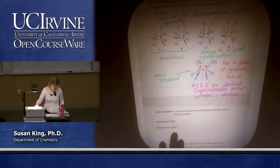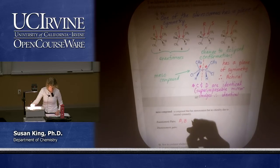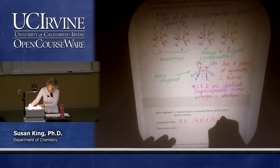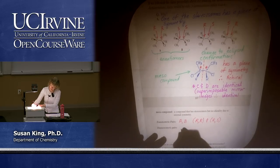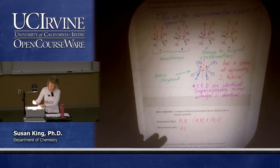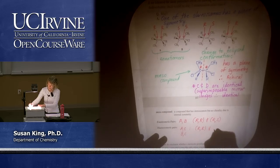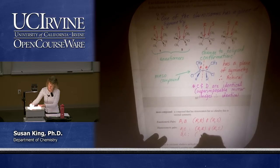Enantiomeric pairs: A and B are RR and SS. Diastereomeric pairs — we leave off D because D is identical to C, so we work with A, B, and C. Diastereomeric pairs are A and C, and B and C: RR and RS for A and C, and SS and RS for B and C.